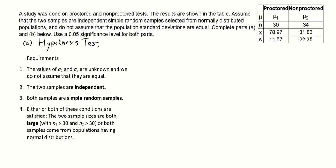First, let's check the requirements. For a test like this, we need four requirements. The first one, the value of sigma1 and sigma2, which is the population standard deviations, are unknown. They are unknown. And we do not assume that they are equal. And it did say here, do not assume the population standard deviations are equal. So satisfy the first requirement.